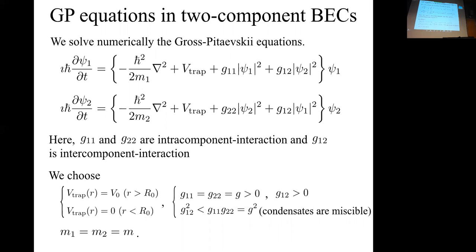We choose a box potential as the trapping potential, where R0 is the radius and V0 is the height of the potential. We take G11 equal to G22, so G are equal to G, and this G is positive. G12 is also positive, and we choose G12 to satisfy the miscible condition. Under this condition, the two components are miscible in the box potential. We take the masses of atoms M1 and M2 to be equal.